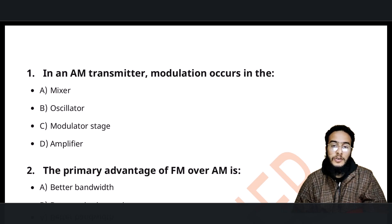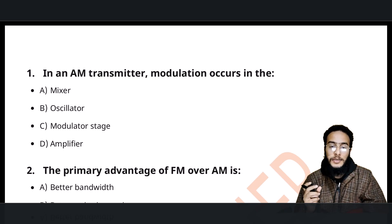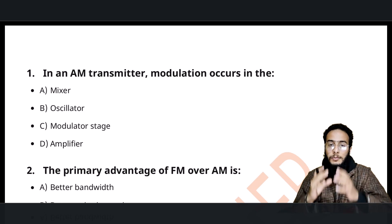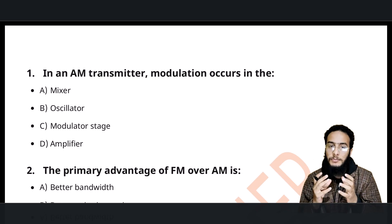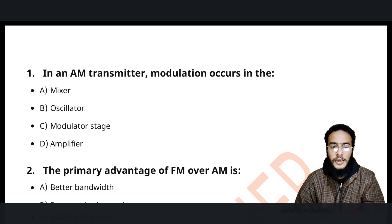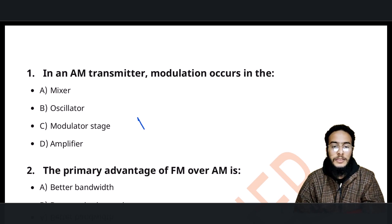The first question goes like this: In an AM Transmitter, modulation occurs in which stage? If you can see the Transmitter, what is the work of the Transmitter? In the first stage it is the Transmitter.